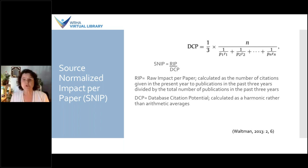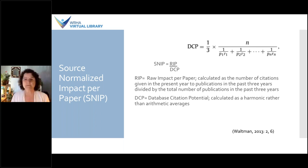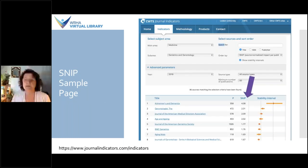SNIP allows you to make direct comparisons of journals in different subject fields. It also uses three years of cited publications and includes citations only from selected document types: articles, conference papers, and reviews — unlike JIF, which includes citations from all sources and document types. To find the SNIP, it's available at the CWTS Journal Indicators. I've selected Geriatrics and Gerontology and you can see the SNIP value there.